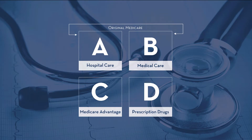So there are different plans for Medicare. Plan A is hospital care. B is medical care. I'm going to skip to D because that's prescription drugs, because those three kind of go together. And C is Medicare Advantage.